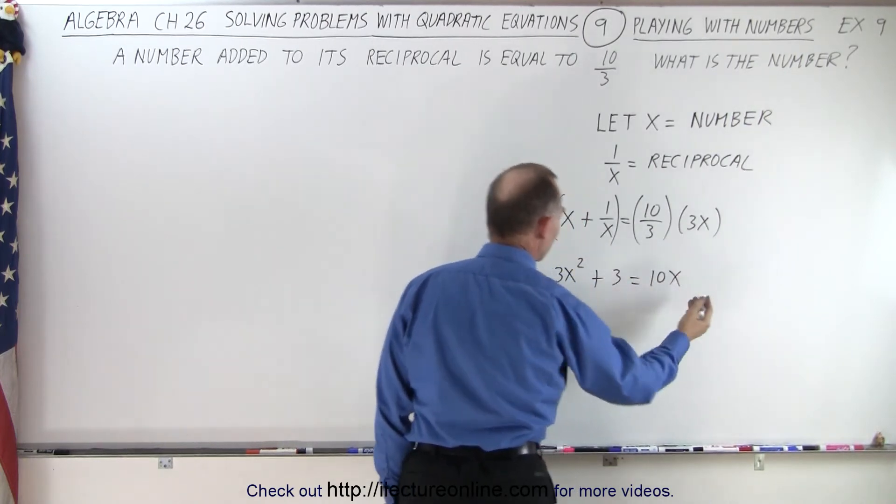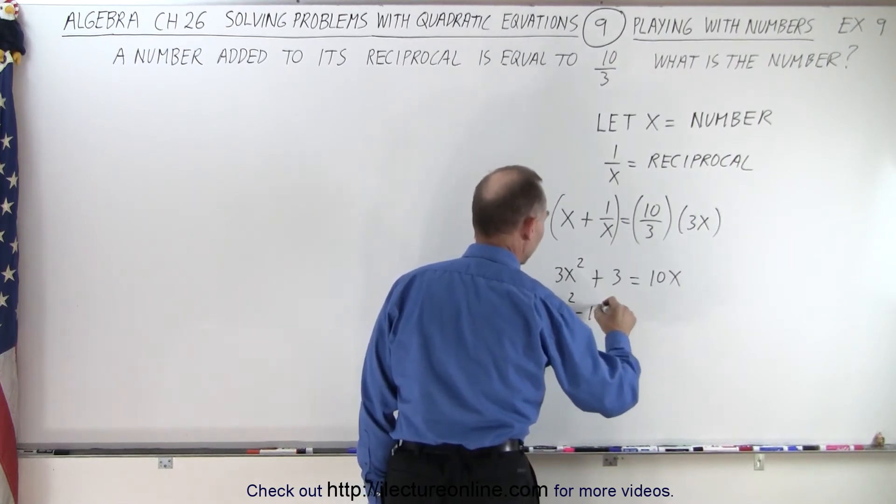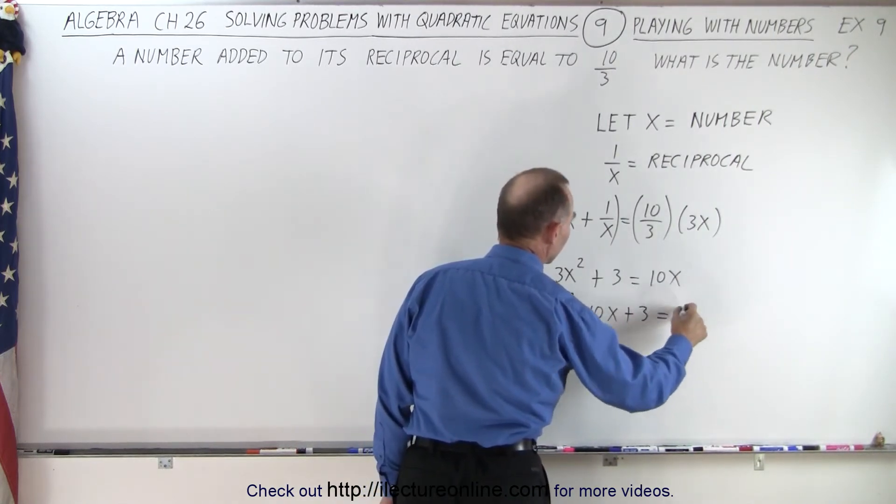And then moving the 10x across, we get 3x squared minus 10x plus 3 is equal to 0.